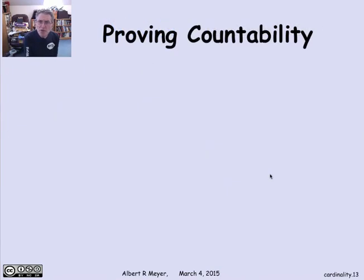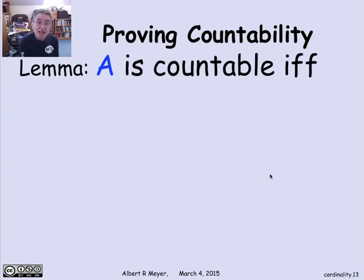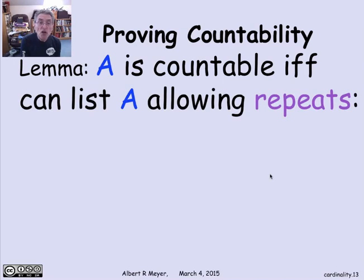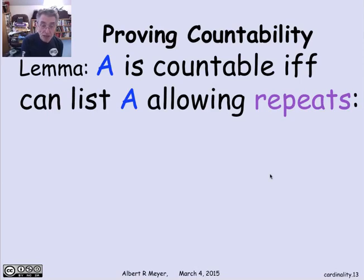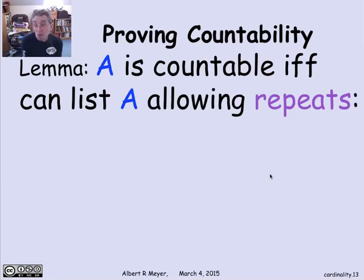When trying to prove countability, it's very useful to have the following lemma, which gives an alternative characterization: a set A is countable if and only if you can list A allowing repeats. Our original definition requires listing A without repeats — that's the bijection between the non-negative integers and A. If an element appeared twice, two different non-negative integers would map to it, breaking the injection property.